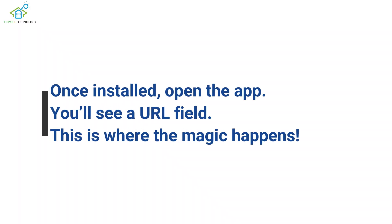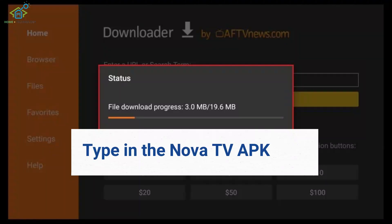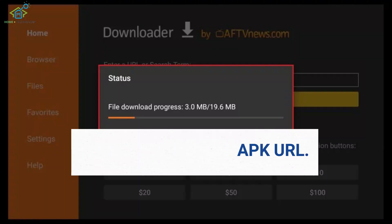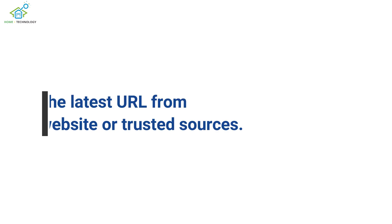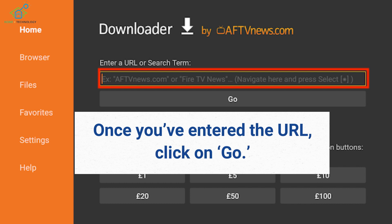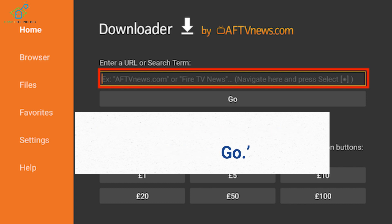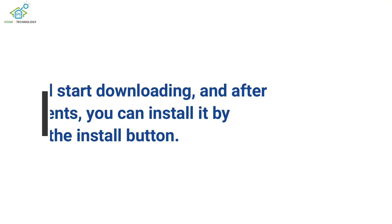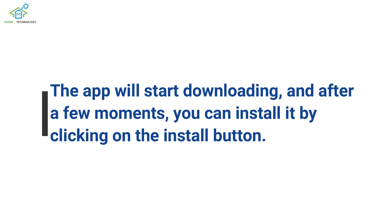You'll see a URL field — this is where the magic happens. Type in the Nova TV APK URL. You can find the latest URL from their official website or trusted sources. Once you've entered the URL, click on Go. The app will start downloading, and after a few moments, you can install it by clicking on the Install button.